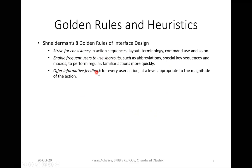The third rule is: offer informative feedback for every user action, at a level appropriate to the magnitude of the action. There should be some informative feedback. The main use of feedback is for improvement purposes. Whatever kind of feedback you are collecting, every system should get improved on the basis of that feedback. So feedback is very important.